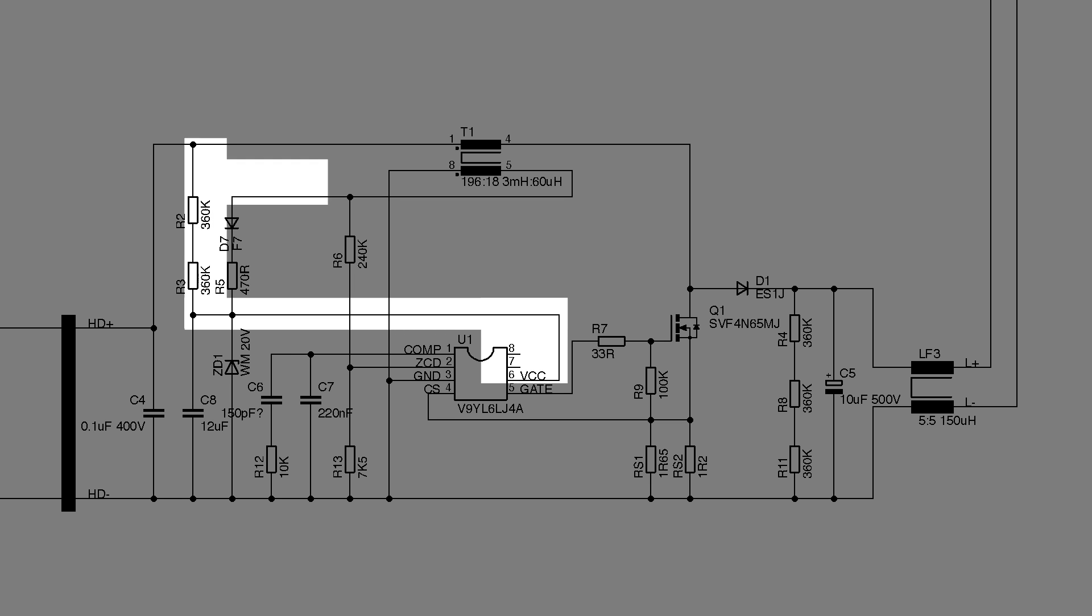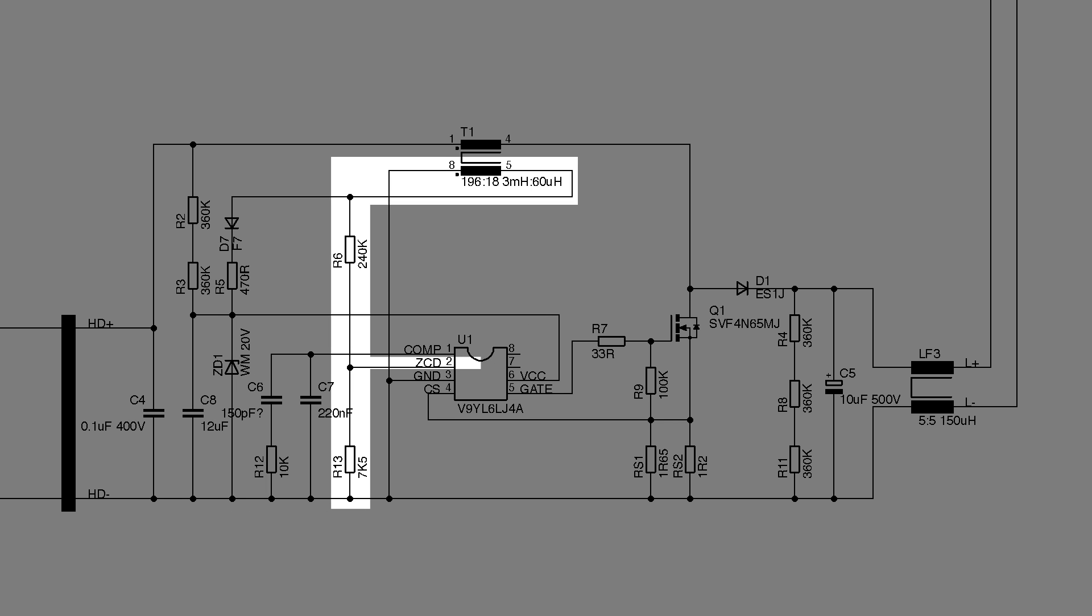Whichever way it gets power, there's a 20 volt Zener diode keeping the voltage down. That auxiliary winding is also used to feed a zero crossing sense input on the chip so it can monitor what the inductor is doing.